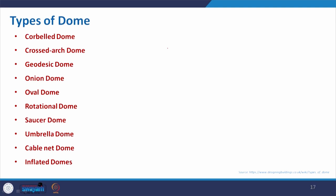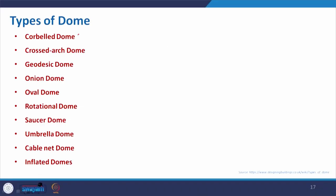Now, the types of domes. Different searches will give different lists; here I have specified the most popular types, though there may be additions. The list starts with: corbelled dome, crossed arch dome (similar to the ribbed vault we discussed), geodesic dome, onion dome, oval dome, rotational dome, saucer dome, umbrella dome, cable net dome, and inflated dome. Let us relate each to the terminology and the vault.